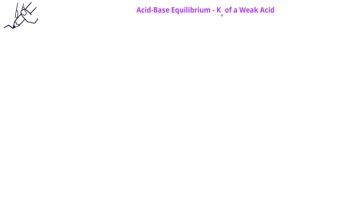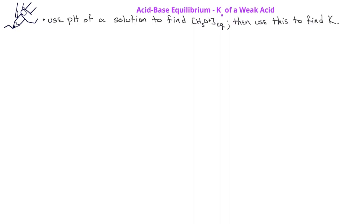In some situations, we can use the pH of a solution and the concentration of a weak acid to find the acid ionization constant value. This is similar to problems in previous videos where we used the initial concentration and some equilibrium concentrations to find an equilibrium constant. Let's look at this problem: we're asked to find the acid ionization constant of a 0.100 molar weak acid solution which has a pH of 4.25.